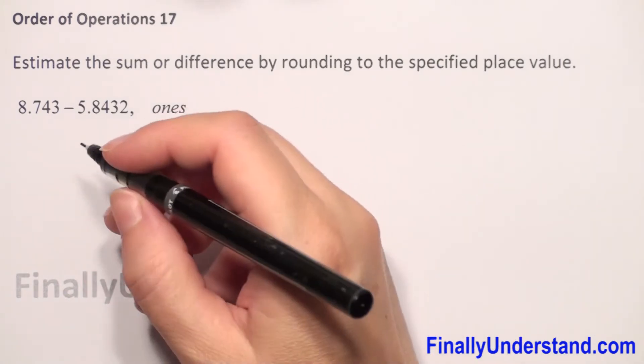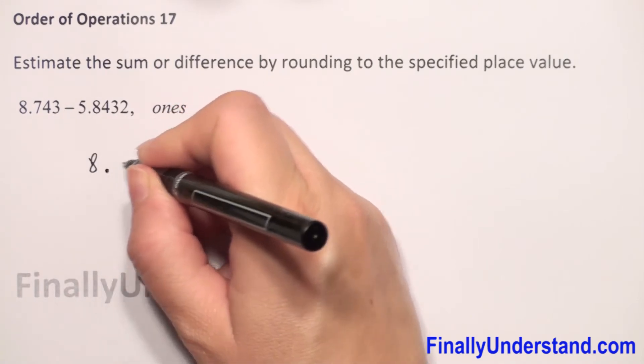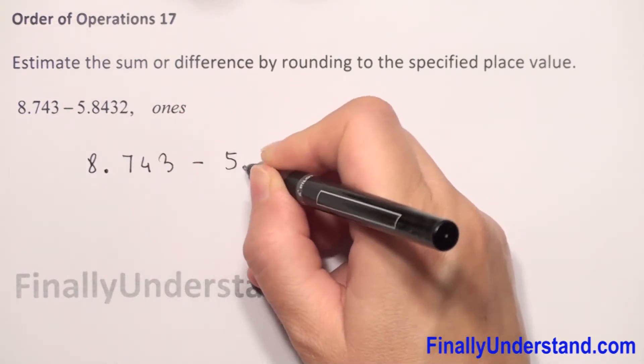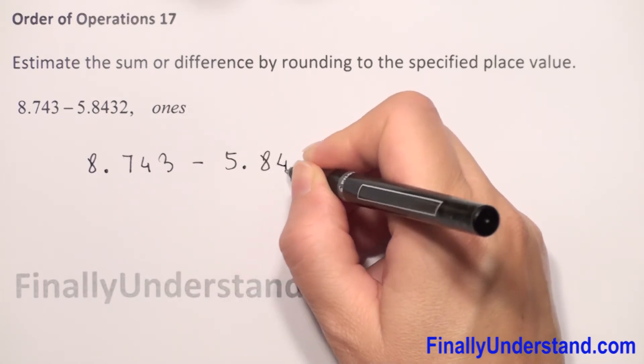Let me copy this example first. We have 8.743 minus 5.8432.